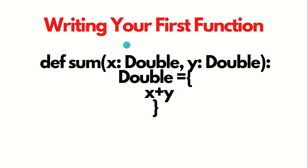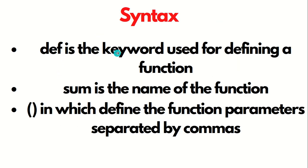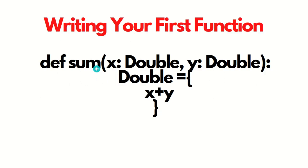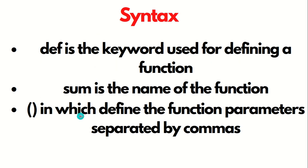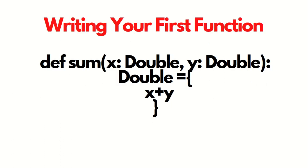First of all, let's see how we can write our first function in Scala. This is a simple example I have taken in which I'm just adding two numbers. Let's explore what's the meaning of each and every term used in this example. Functions in Scala always start with the DEF keyword. DEF is a keyword used for defining a function, followed by the function name. In this case, it's SUM, followed by parentheses in which we specify the function parameters.